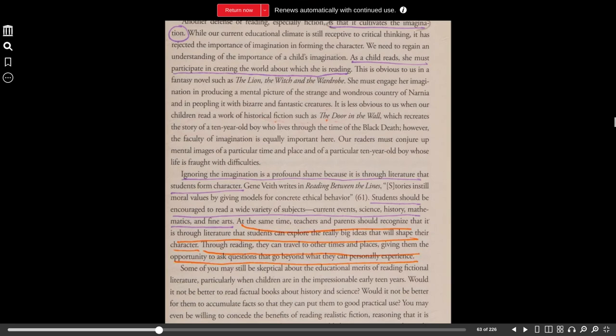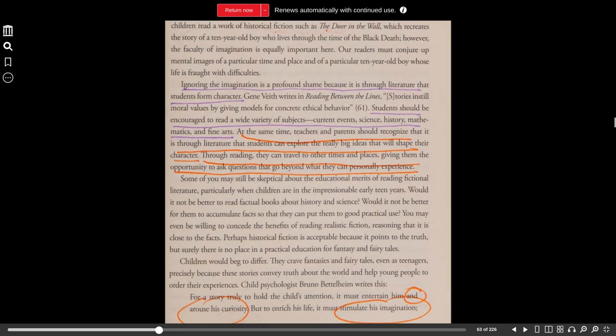However, the faculty of imagination is equally important here. Our readers must conjure up mental images of a particular time and place, and of a particular ten-year-old boy whose life is fraught with difficulties. Ignoring the imagination is a profound shame because it is through literature that students form character. Gene Veith writes in Reading Between the Lines, Stories instill moral values by giving models for concrete ethical behavior.